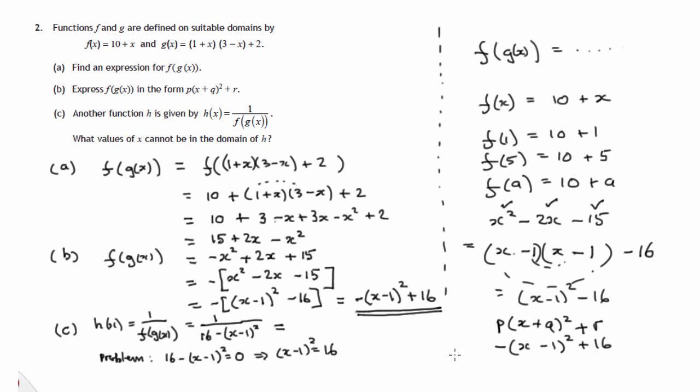16 minus 16 is 0. That'll only happen if the number x minus 1 that we're squaring is either 4, because 4 times 4 is 16, or negative 4, because negative 4 times negative 4 is still 16. And so that happens if x is 5, x minus 1 equals 4, if x is 5, or x equals minus 3, negative 3. We're adding 1 to both sides of these equations.